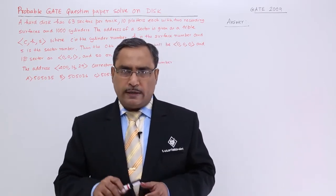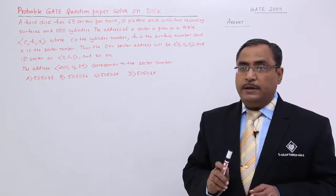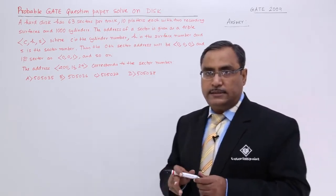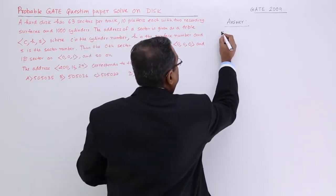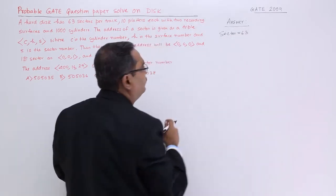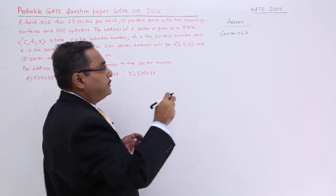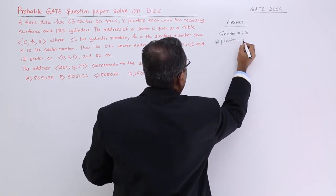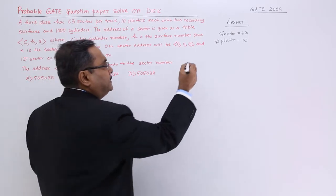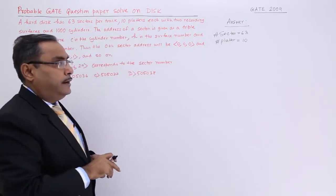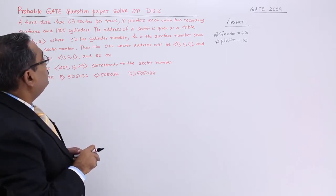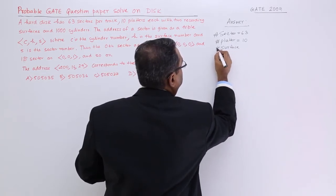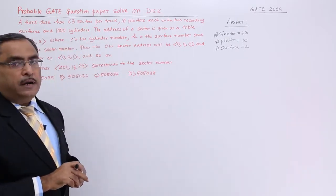Now in this particular problem, let us discuss the problem first. This question came in the GATE exam 2009. A hard disk has got 63 sectors per track. It is having 10 platters. So, number of sectors per track is 63, number of platters is equal to 10, and then we are having two recording surfaces — surface per platter is equal to 2.